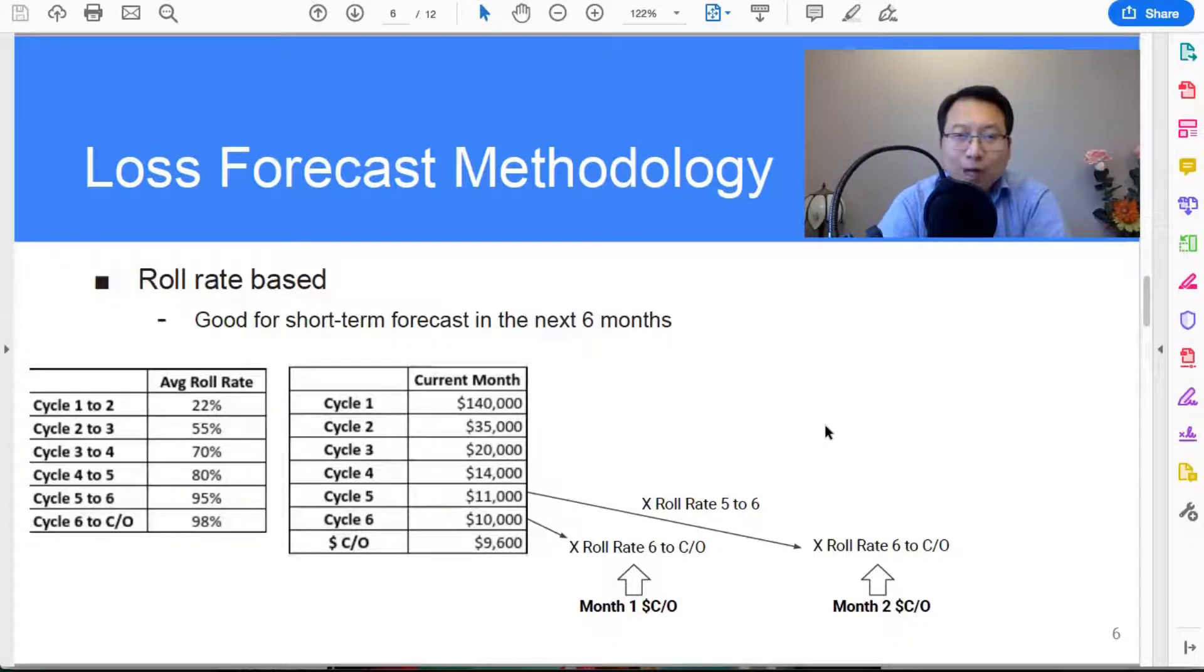So in month one similarly we can also forecast the cycle six balance, which is the roll from cycle five in current months. So the calculation is that you use the $11,000 in cycle five from current months times the 95 percent roll rate from cycle five to six.